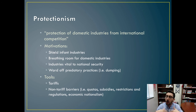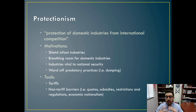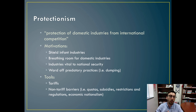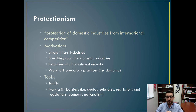Quotas are just hard numbers of the amount of products you're allowed to import from other countries. During the 1970s and 1980s, the United States put quotas on Japanese automobiles because they posed a threat to the domestic auto industry, restricting the amount of Japanese cars that could be imported in a given year so they would never fully overtake the American auto industry.